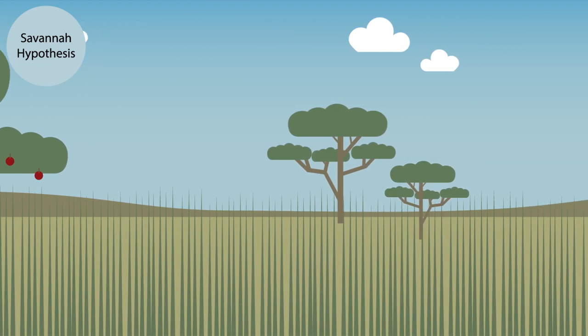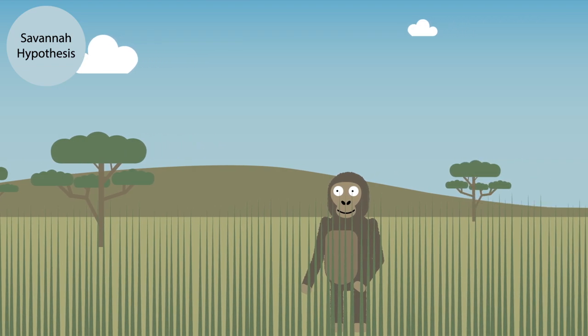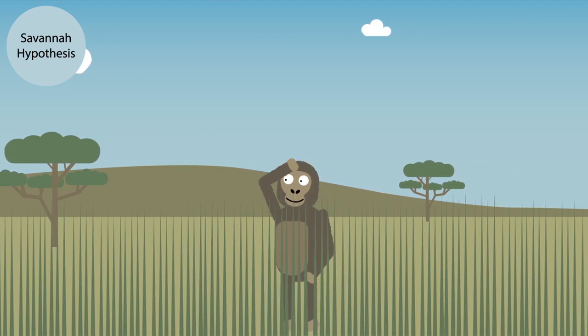The savannah-based theory was one of the original models to explain bipedalism. Due to the changes in the environment, not only did our ancestors have to travel further for food, but also needed to see over the tall grasses to be aware of predators.